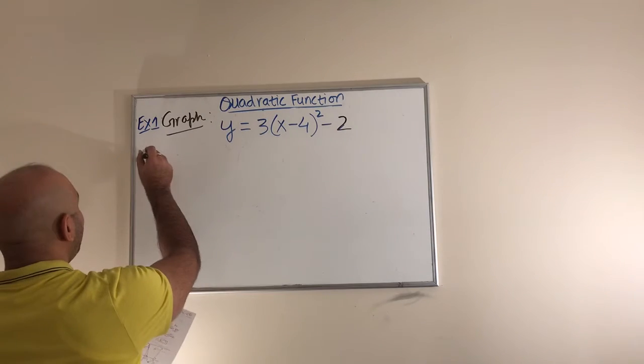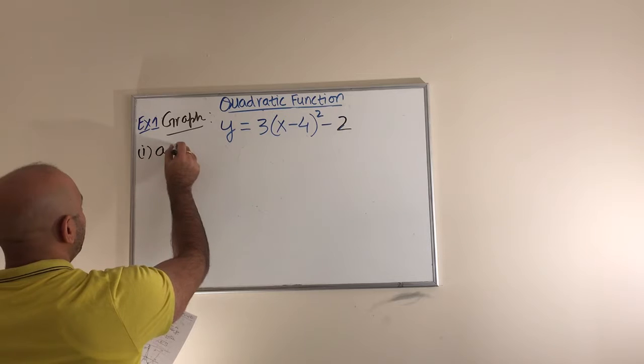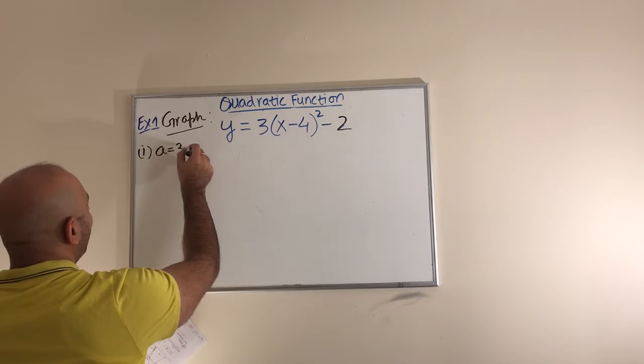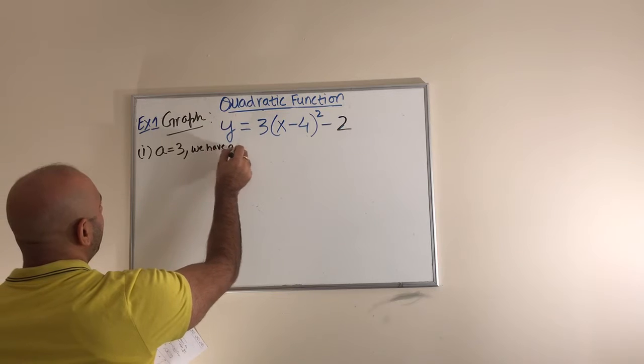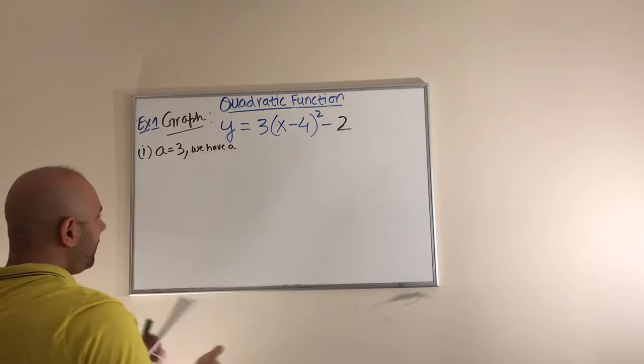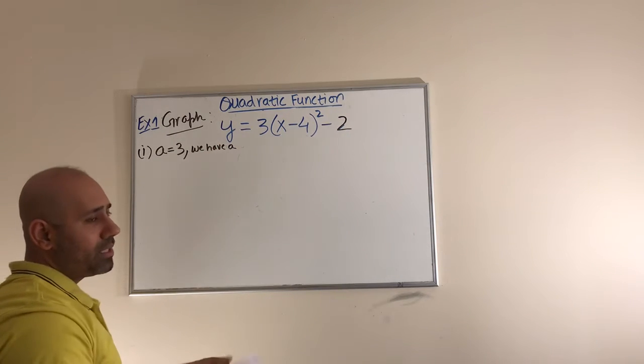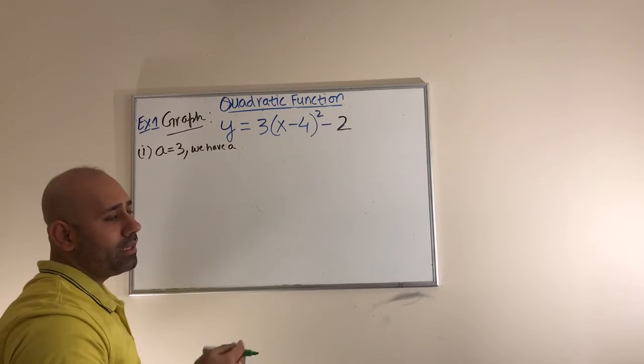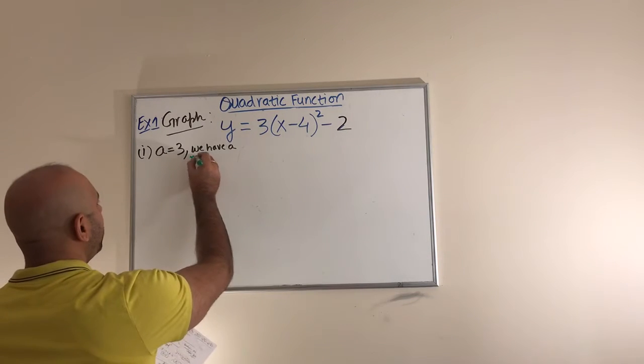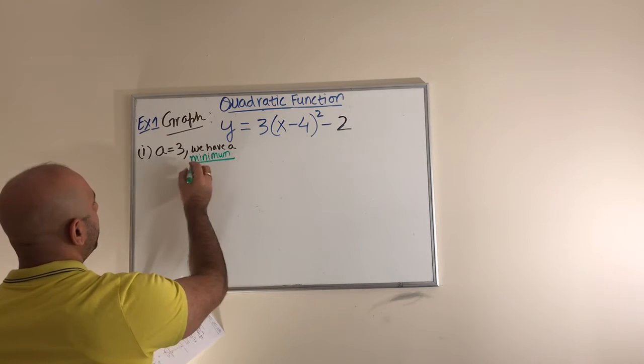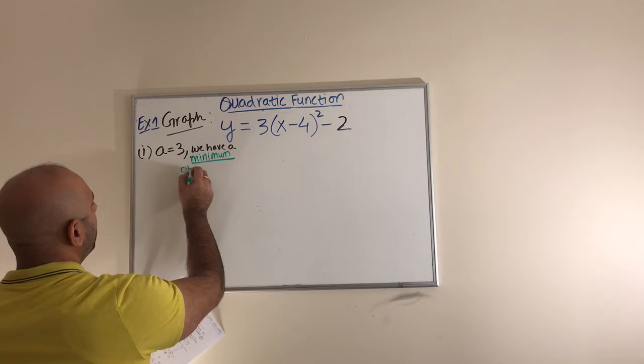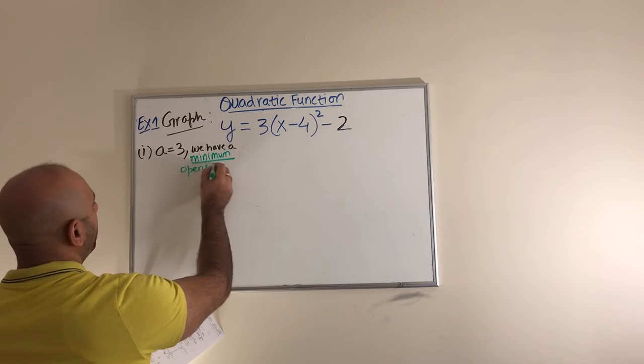What do I have? I have my value for a which is 3, which tells me we have a min, we have a minimum. Which tells me that the graph opens up, and if it opens up then I have a minimum. We have a minimum.